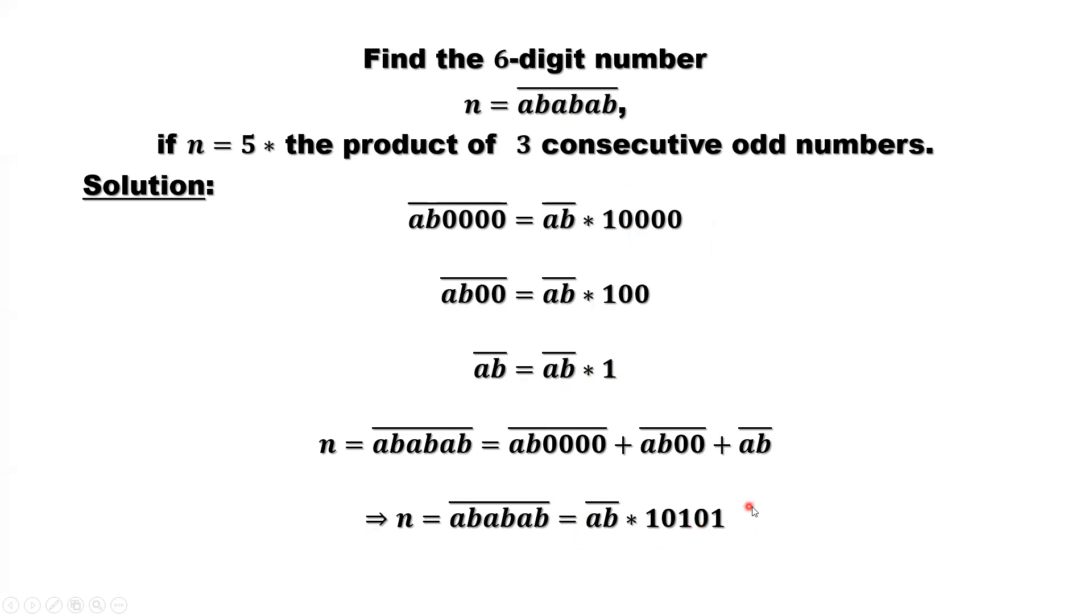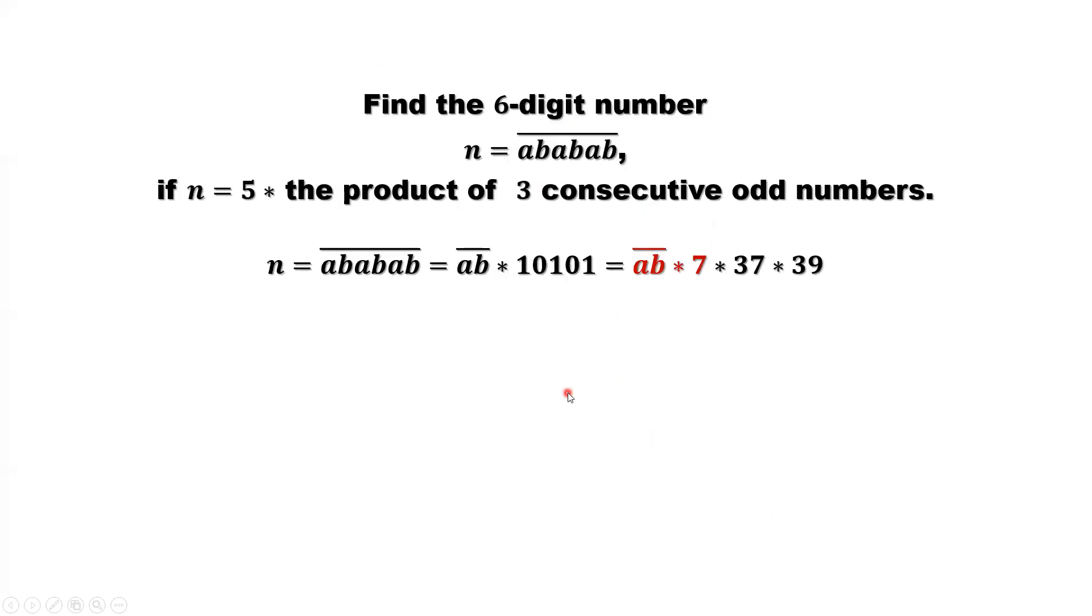So we are here now. What's next? Factor this. You can see 10,101 equals 7 times 37 times 39. You may ask, why are you doing this? We are using the given information. Three consecutive odd numbers. Although 39 we still can continue to factor it as 3 times 13, but we don't need it. So here you can see 37, 39 are two consecutive odd numbers.